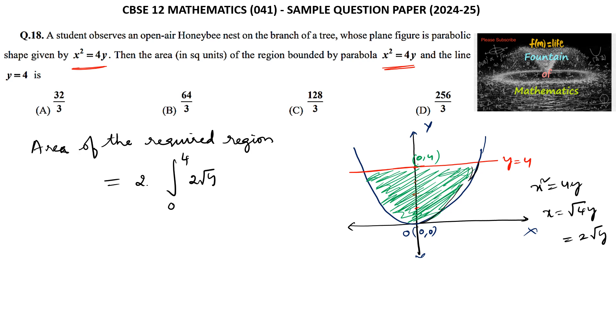So 2√y dy, which is equal to 2 × 2 × y^(3/2) divided by 3/2 over the limits 0 to 4. That is 2 × 2 × 4^(3/2) minus 0, upper limit minus lower limit.